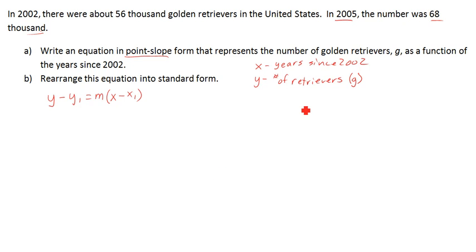So what we want to do next is we want to take this particular problem and we want to say what points do we have from the statement. You can write those as points. A lot of people like writing it as a table where they have x is the year since 2002 and y being the number of golden retrievers.